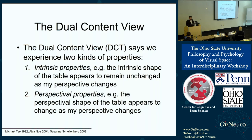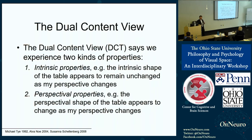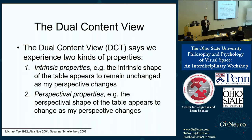Treatments of these perspectival properties vary depending on the component of the dual content view. But the basic idea is that we can do justice to both aspects of visual appearance — its variable and constant elements — without imputing any inconsistency to appearance. A table can retain its intrinsic shape unchanged while nevertheless changing in its relational, perspectival shape properties. Objects have both kinds of properties, they also appear to have both kinds of properties, and so in the best cases, appearance matches reality and there's no illusion.